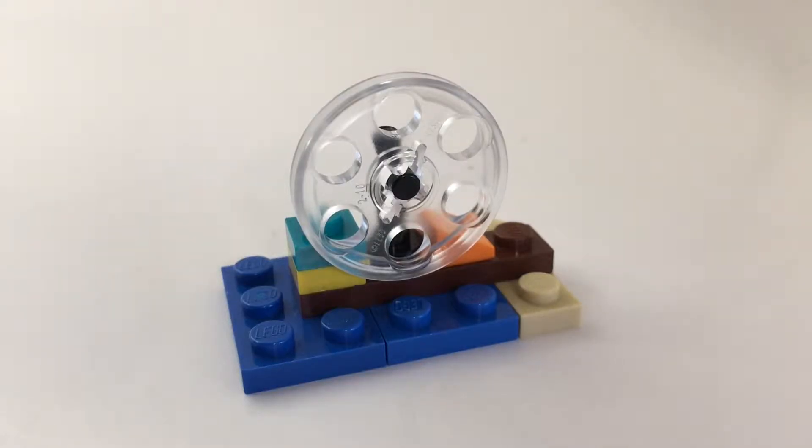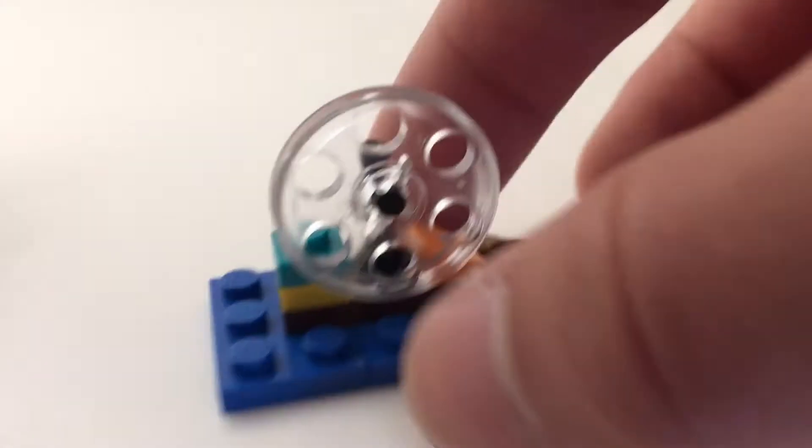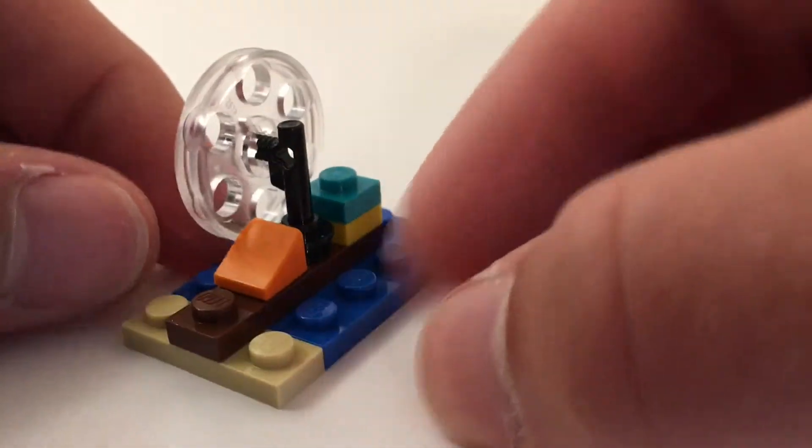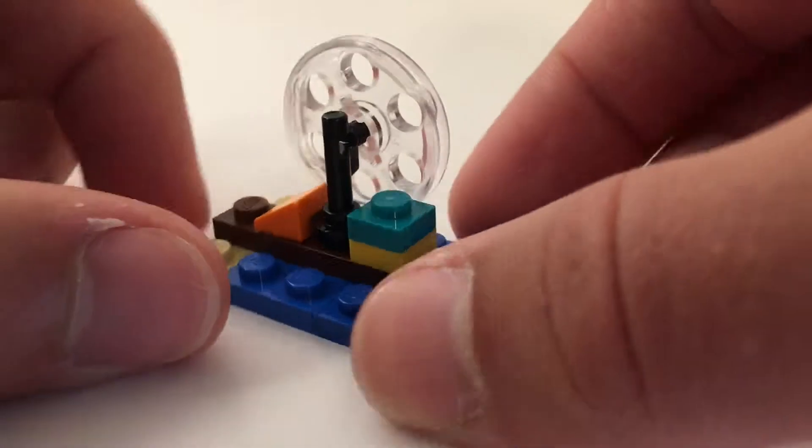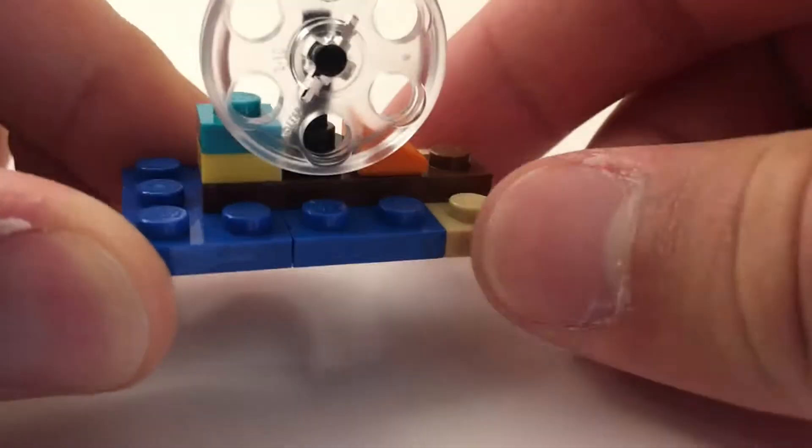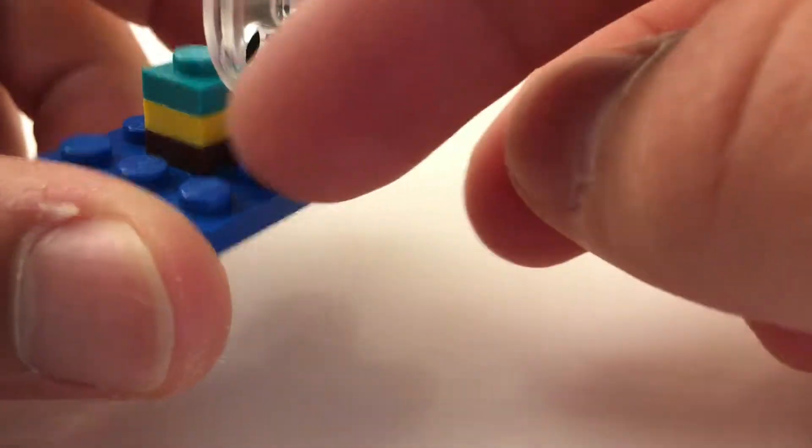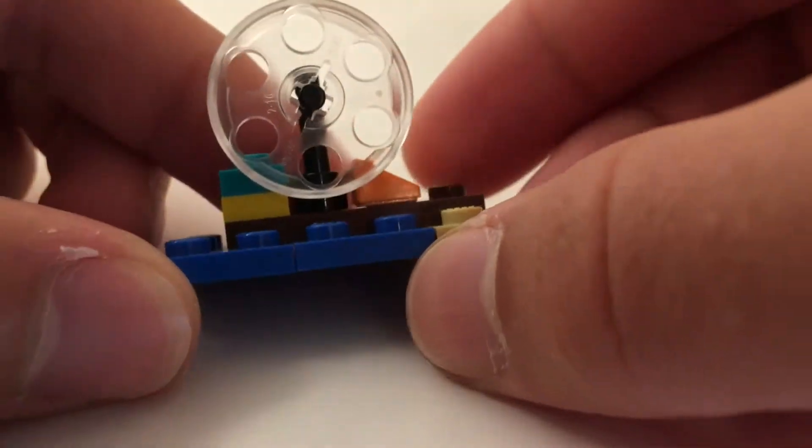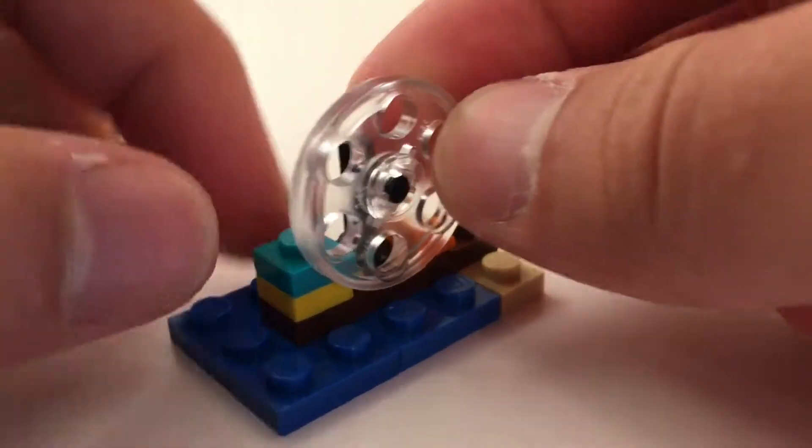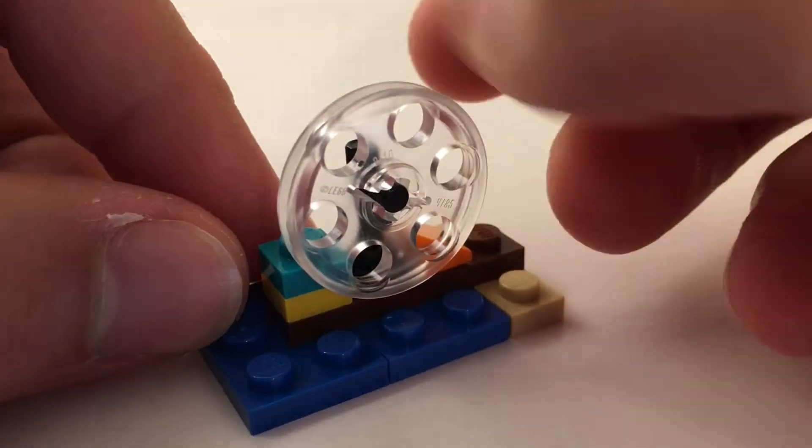All right, here is our model. As you can see, this is a micro-scale design and we have the ocean and the beach back here, and this brown one by four going through there represents the pier. Up here we have our ferris wheel.